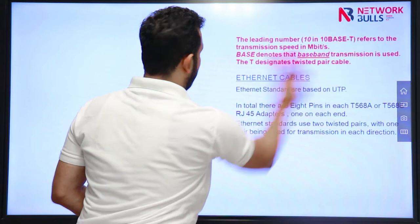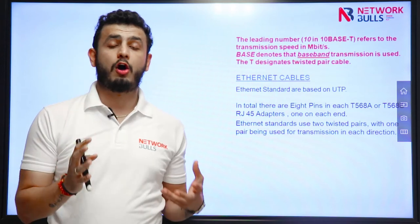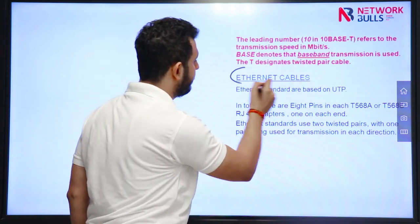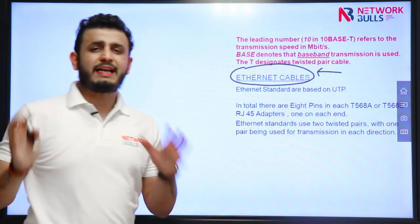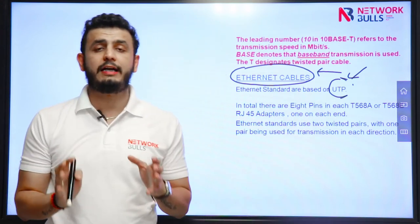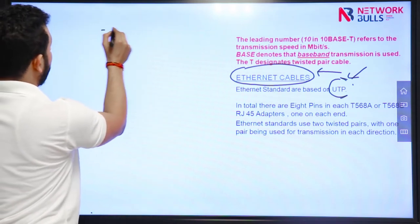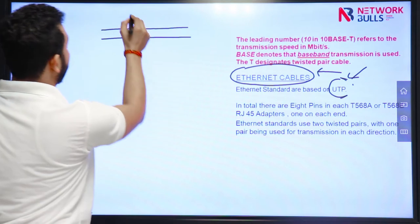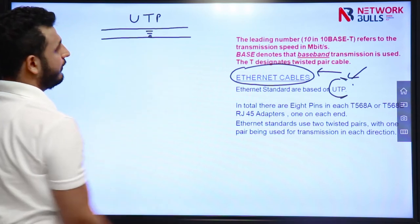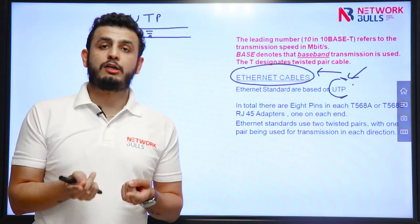Whether you are new to networking or have been working in it for a long time, the type of cable you always hear about is Ethernet cables. Ethernet cables are based on the UTP concept — unshielded twisted pair cables. A UTP cable has 8 wires present in 4 pairs, with each cable twisted with the other.